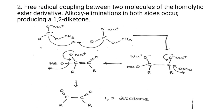Step two is the free radical coupling between two molecules of the homolytic ester derivative. After the electron transfer, a radical anionic species is formed. The radical anion is stabilized by the counter cation Na⁺. After that, dimerization takes place, and a diketone-type compound is formed.